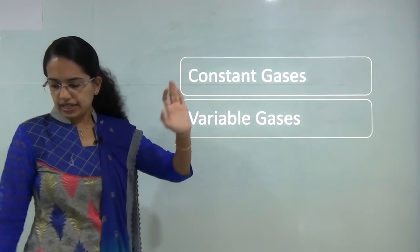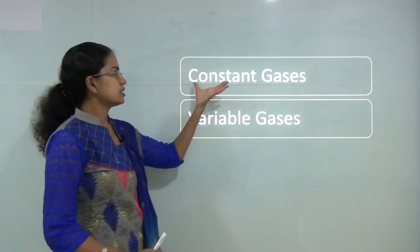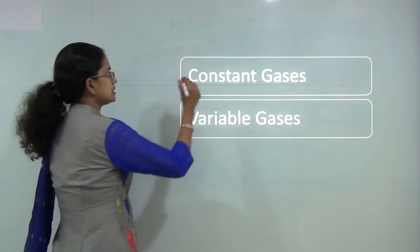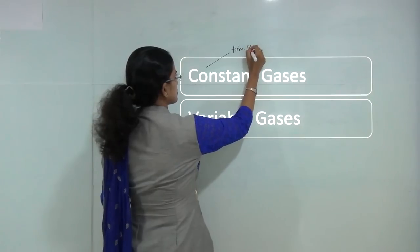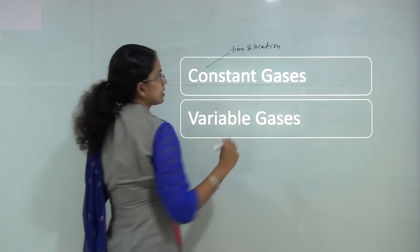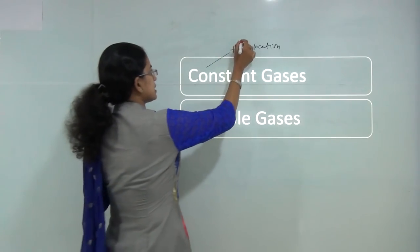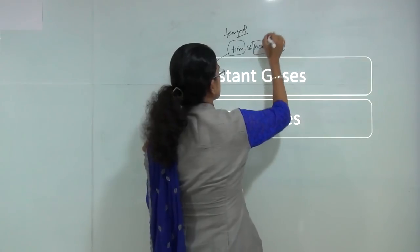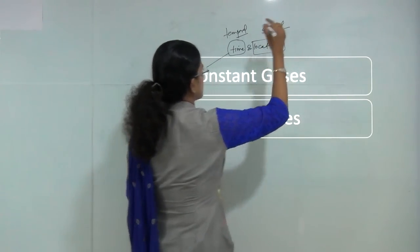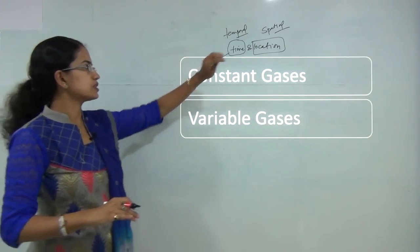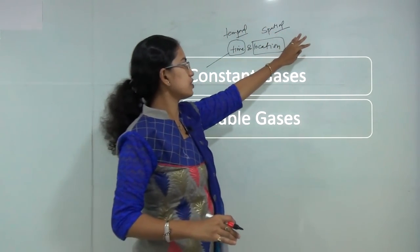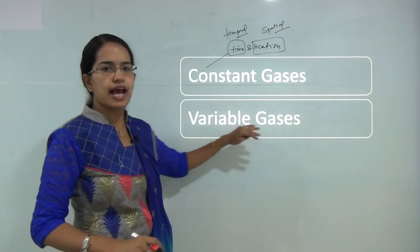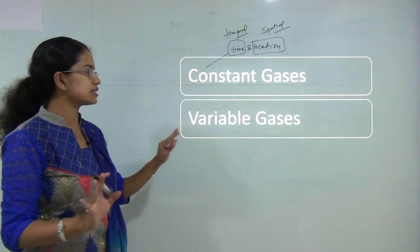We can classify gases into 2 basic types: constant gases and variable gases. Constant gases remain the same over time and location — considering both temporal and spatial phenomena. Variable gases vary over time and location in very simple terms.